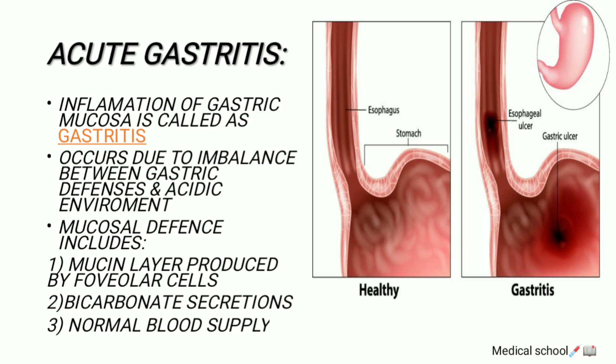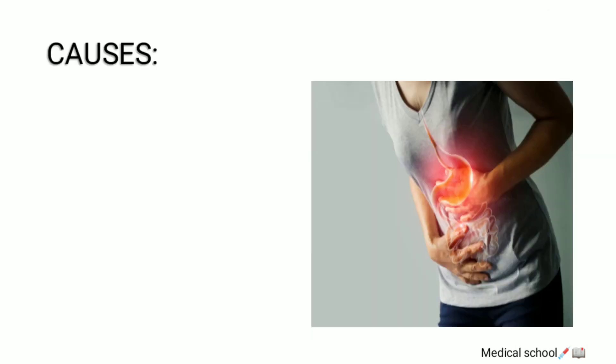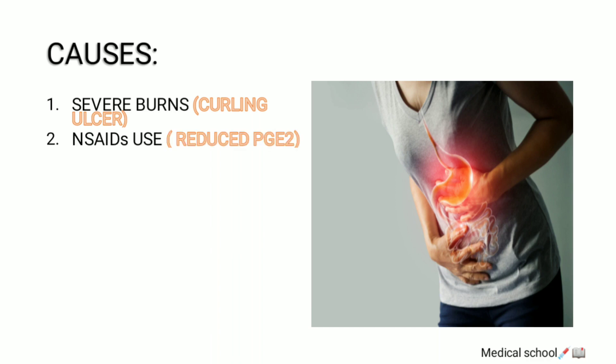So what are the causes? Number one, we have severe burns, also called curling ulcers, in which hypovolemia occurs and the stomach doesn't get normal blood supply. The most common condition is NSAID use, in which prostaglandin E2 is reduced. Prostaglandin E2 has a specific function in maintaining the mucosal lining of the stomach. High consumption of alcohol may also lead to this condition.